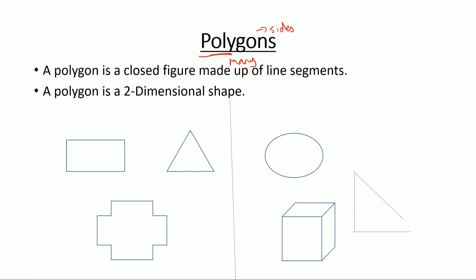By definition, a polygon is a closed figure made up of line segments. So it's a closed figure. When I say closed figure, that means there should be no opening in that figure.